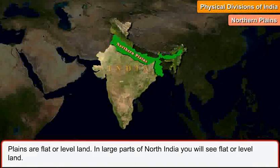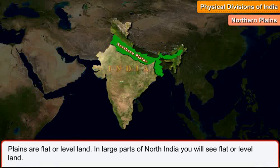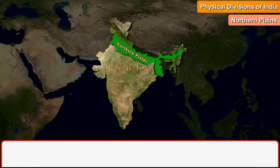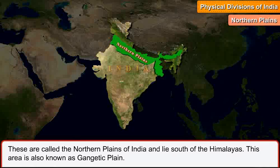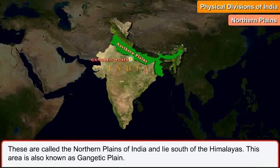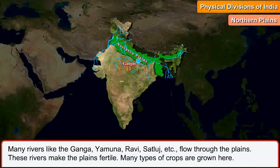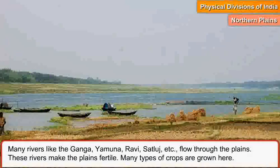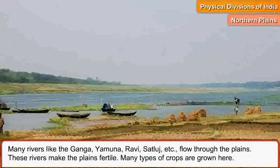Northern Plains. Plains are flat or level land. In large parts of north India, you will see flat or level land. These are called the northern plains of India and lie south of the Himalayas. This area is also known as Gangetic Plain. Many rivers like the Ganga, Yamuna, Ravi, Satlaj, etc. flow through the plains.